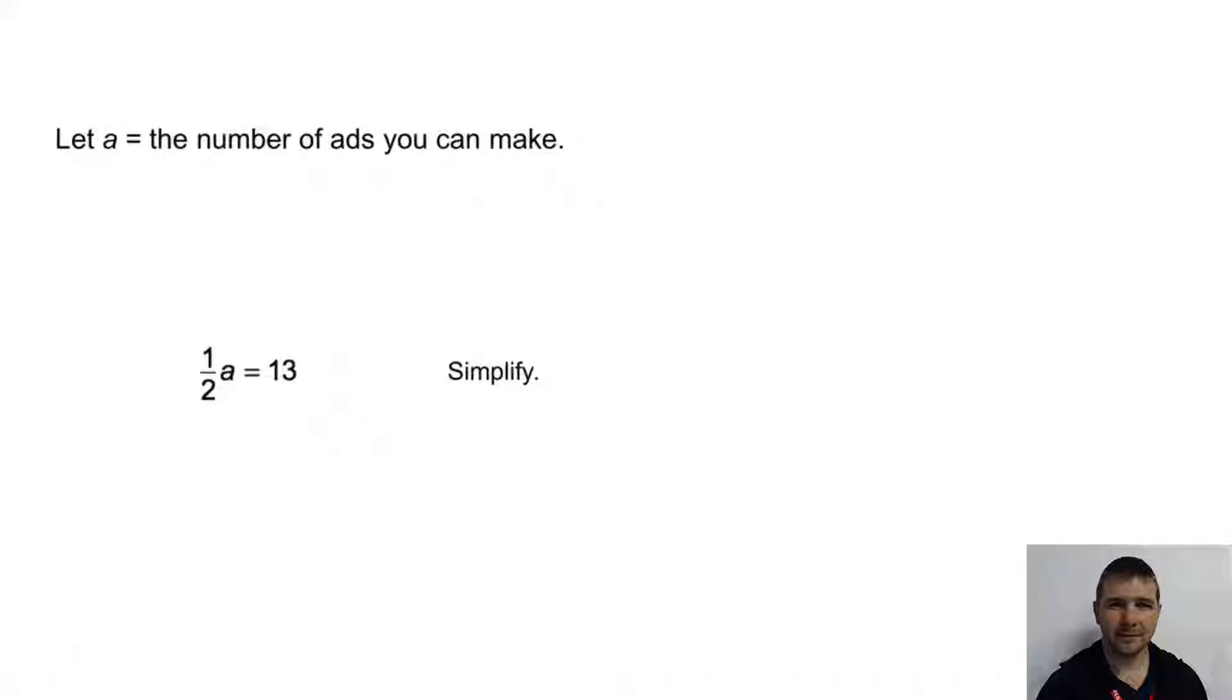But a isn't isolated yet. We need to get rid of that one half coefficient. And so we use the reciprocal of one half, two, and multiply each side by that reciprocal. Two times one half is one. So one a on the left hand side. And on the right hand side, two times 13 is 26.